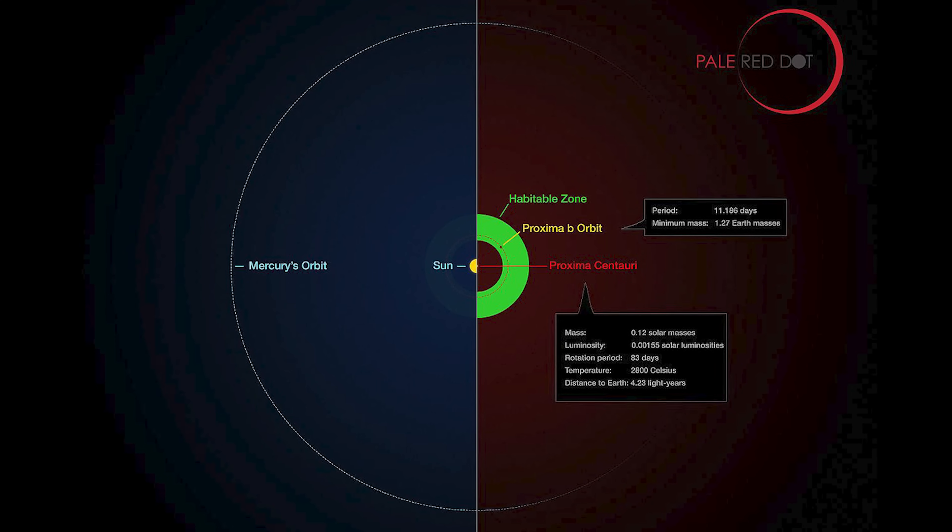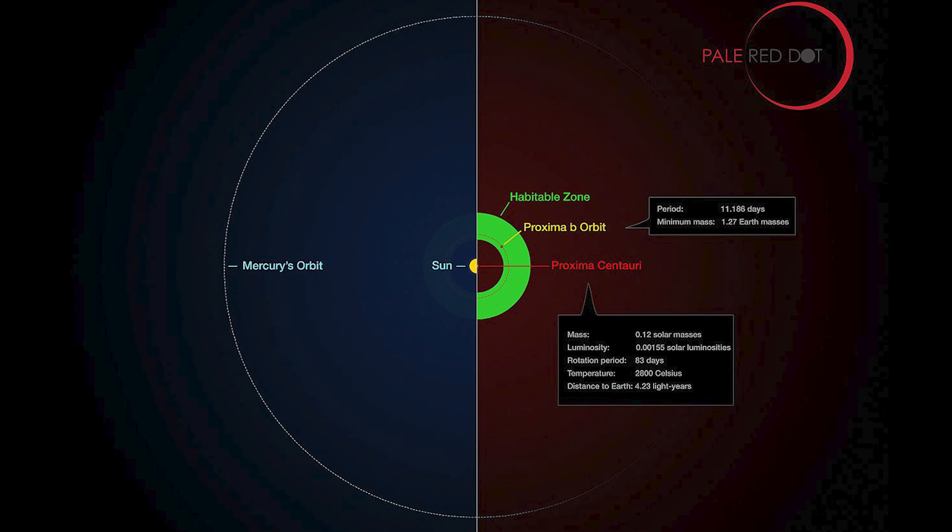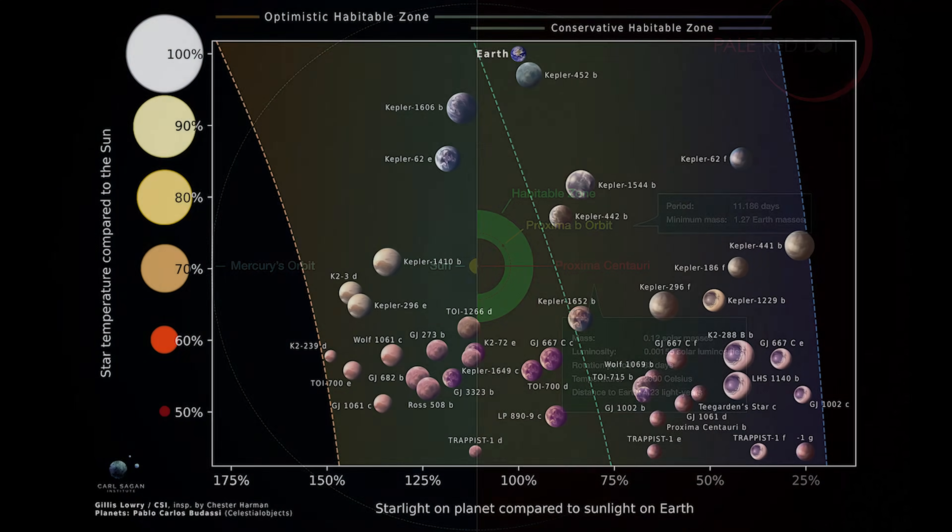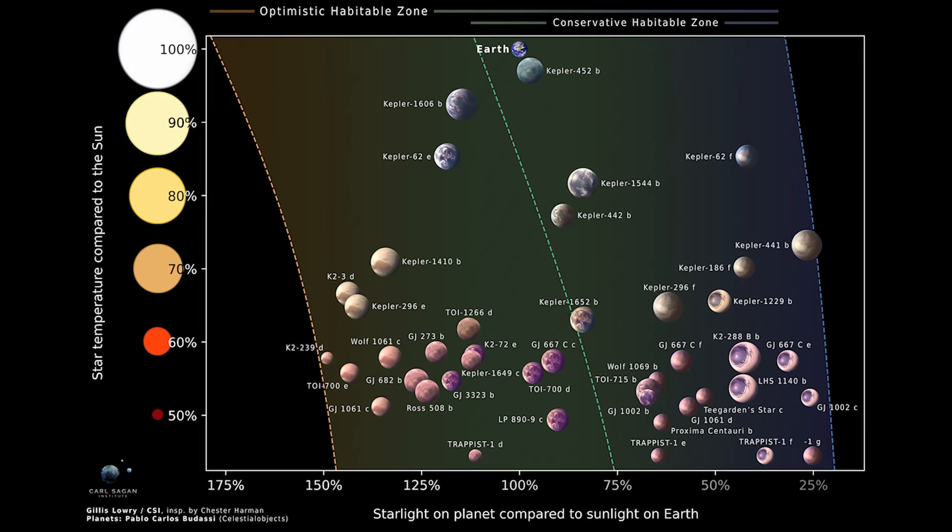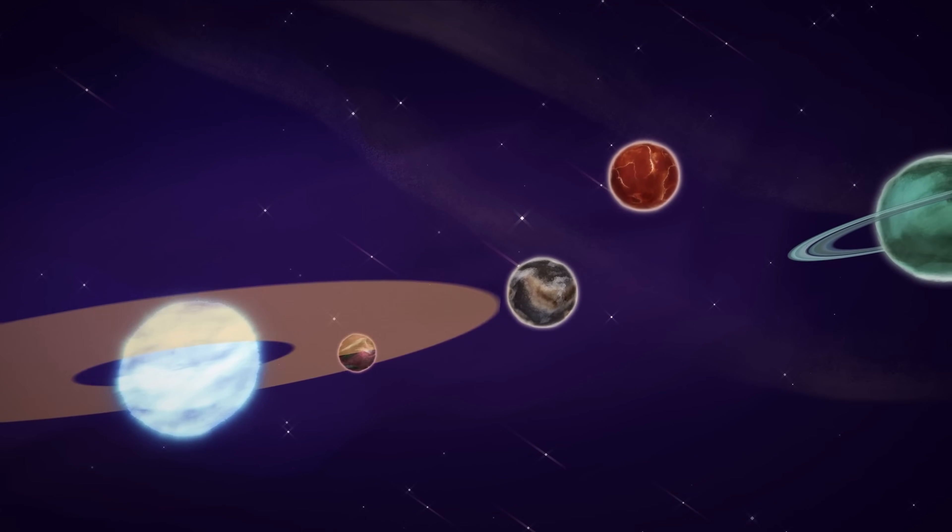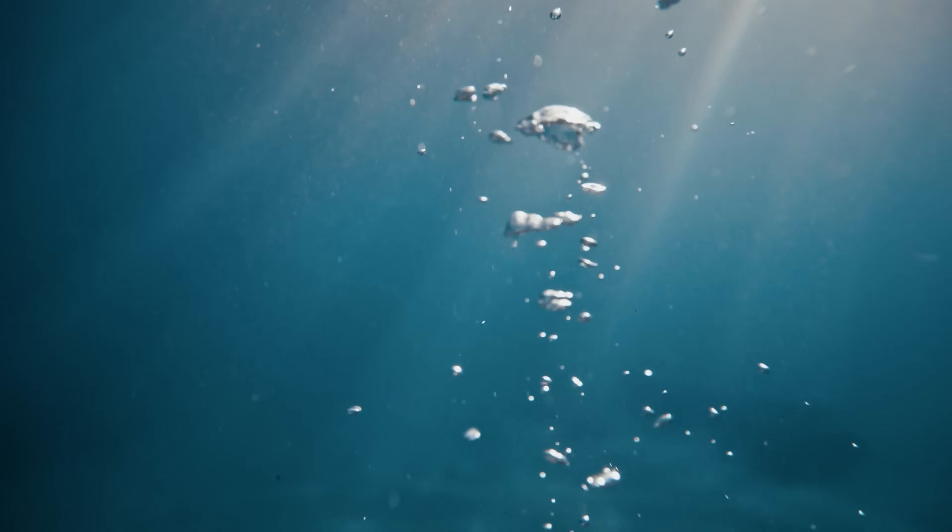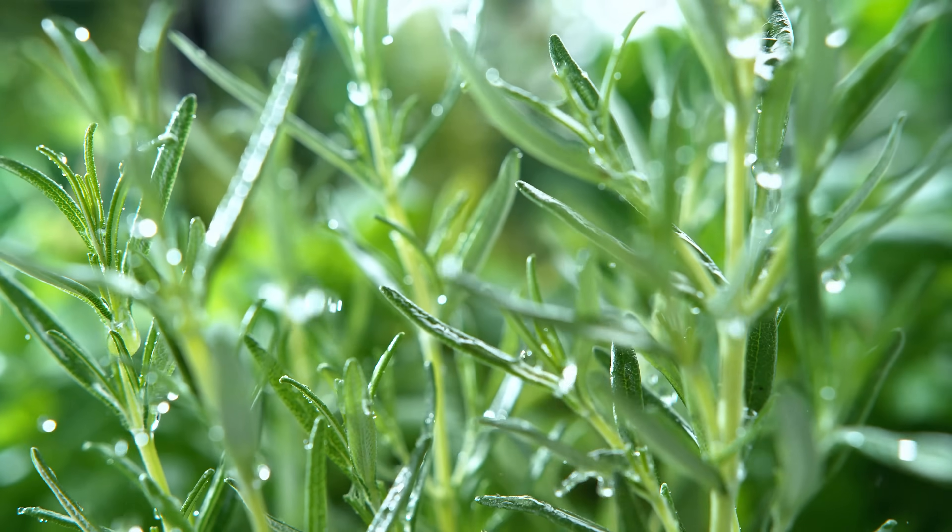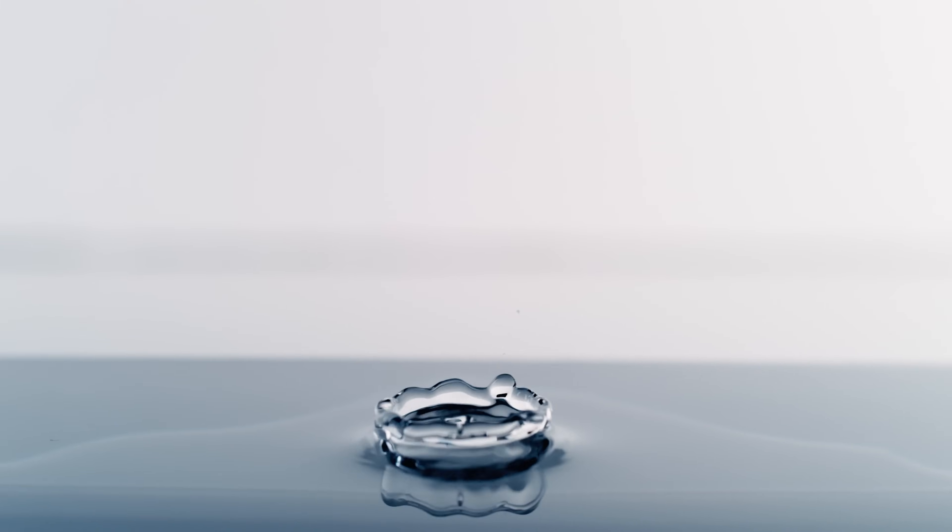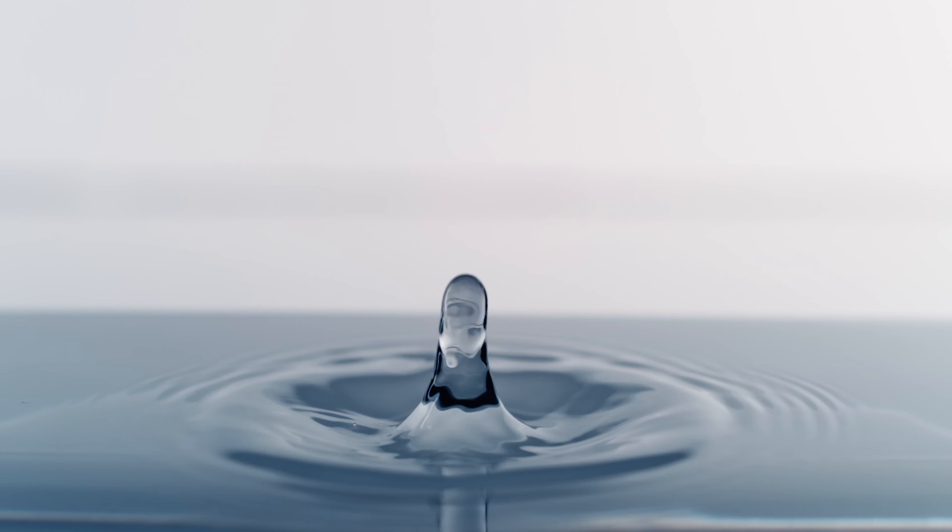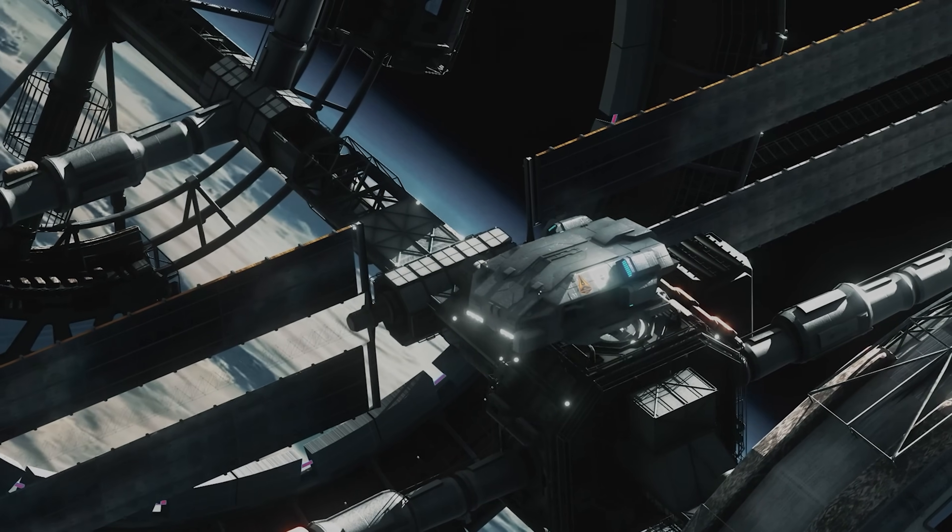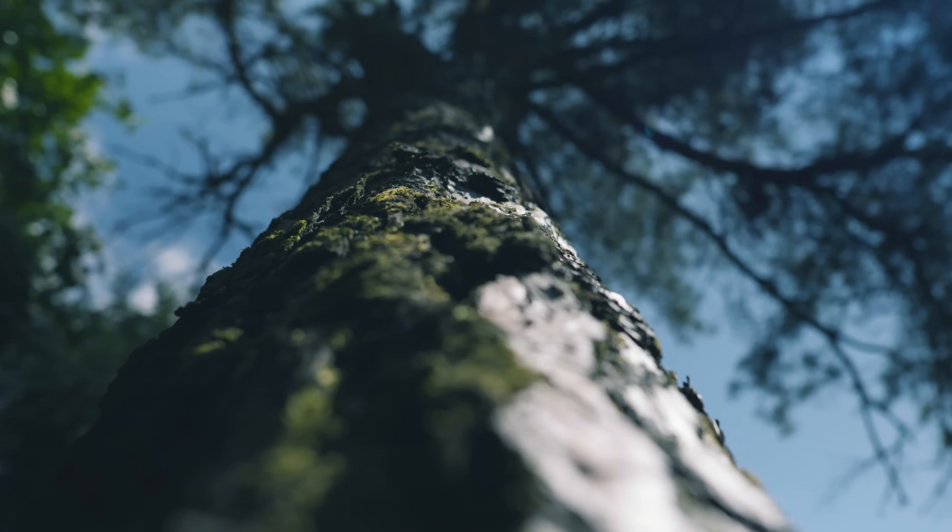Proxima B's location in the habitable zone makes it a compelling candidate in the search for a second home for humanity. But what does this really mean? The habitable zone, often called the Goldilocks zone, is the region around a star where conditions are just right for liquid water to exist on a planet's surface. And why is liquid water so important? Because it's essential for life as we know it. Liquid water isn't just a nice-to-have, it's one of the key ingredients we look for when searching for planets that might support life, either for future human exploration or as possible homes to alien ecosystems.